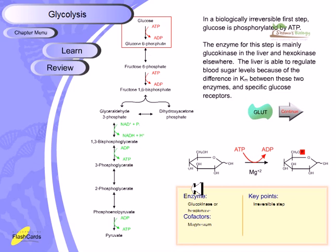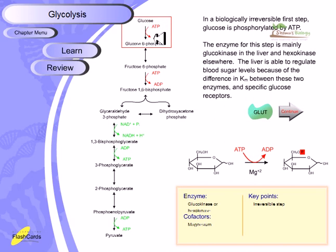Once glucose-6-phosphate is produced, there is no going back — it must stay inside the cell. Glucokinase and hexokinase are both kinases because they add a phosphate group. This step requires a magnesium ion cofactor. Importantly, this is an irreversible step — because converting glucose-6-phosphate back to glucose is energetically unfavorable; the ΔG for that reverse reaction is highly positive, while the forward reaction is highly negative.